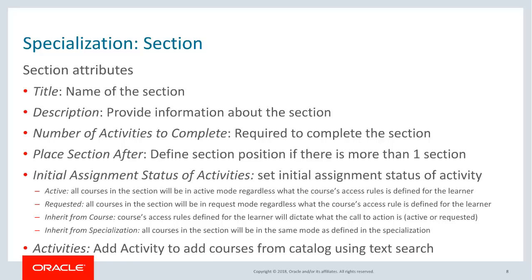The specialist can then add activities to a saved section by searching for and selecting existing courses from the catalog. When a course is searched, the specialist can see the number of active offerings available for that particular course. Repeat this to add more sections and activities. The sections and activities in a specialization can be reordered to control how they appear to learners in their self-service.